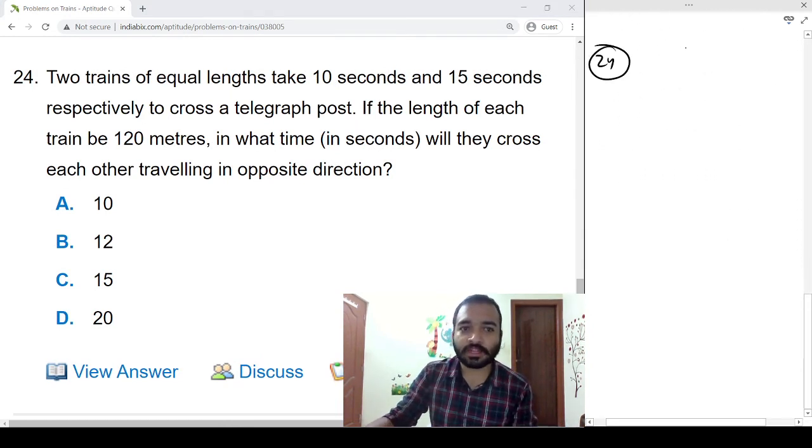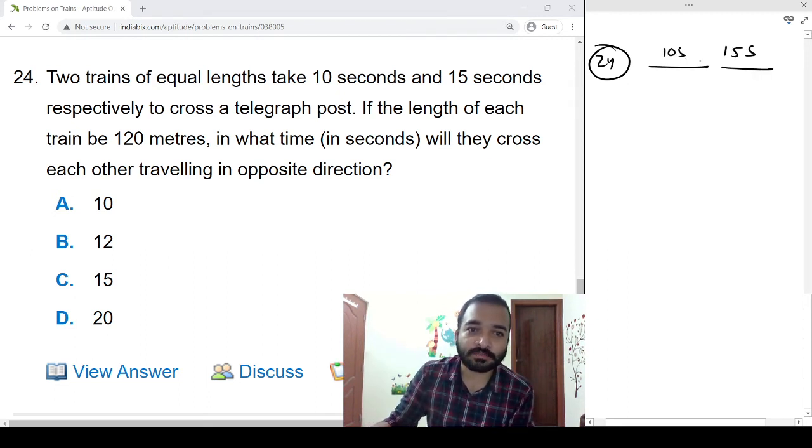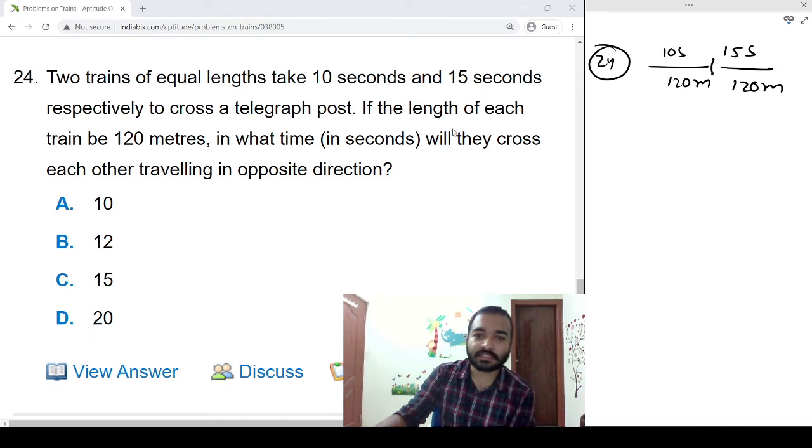Problem 24: Two trains of equal length take 10 seconds and 15 seconds respectively to cross a telegraph post. If the length of each train is 120 meters, in what time in seconds will they cross each other traveling in opposite direction?